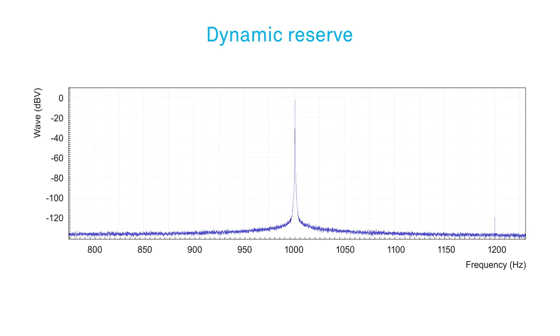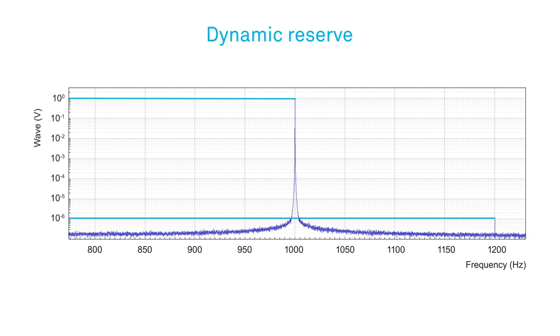A second important consideration is the dynamic reserve, which quantifies the capability of an instrument to reject unwanted signal components while still providing accurate results. With a dynamic reserve of 120 dB, for example, you can measure a 1 µV signal with a specified accuracy of 1% with a nearby disturbance of up to 1 volt.